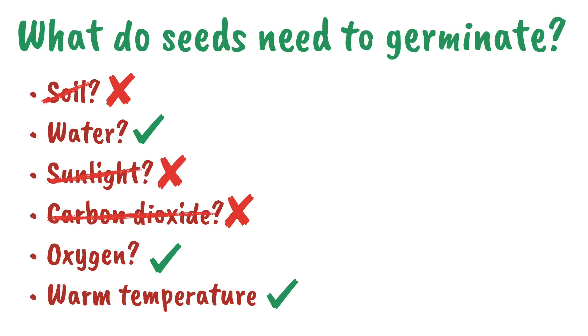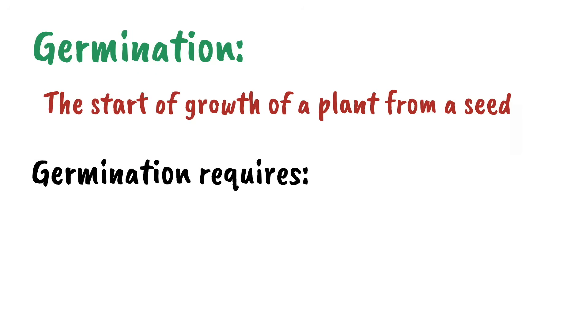The main summary of this video is that germination is the start of growth of a plant from a seed. For germination to happen, seeds require water, oxygen and a warm temperature.